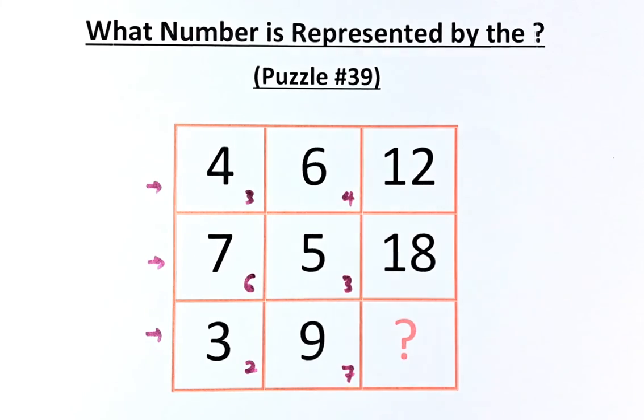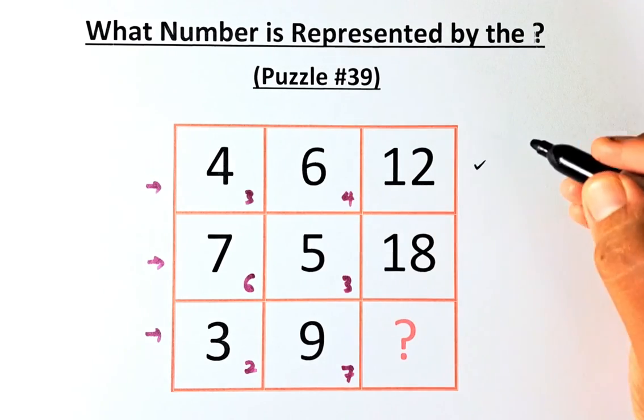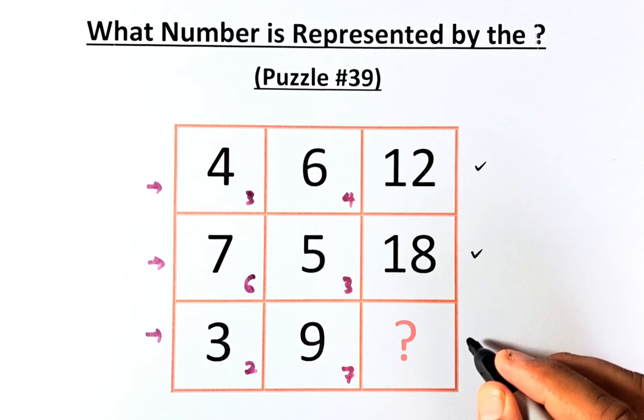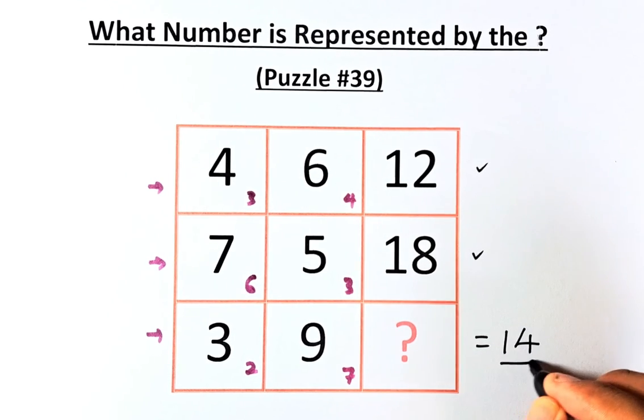3 times 4 gives you 12. 6 times 3 is going to be 18. And 2 times 7 question mark is going to be equal to 14.